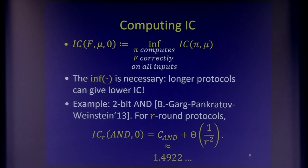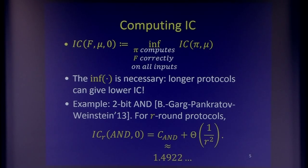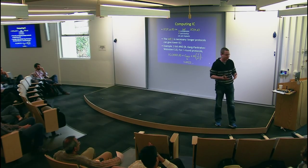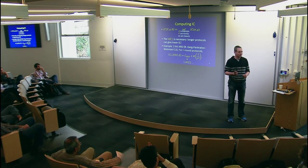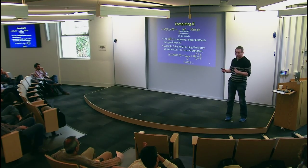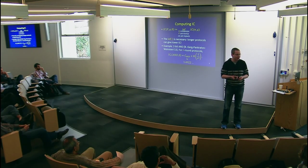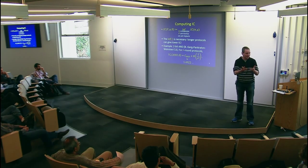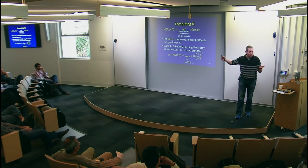In the case of zero-error expected communication, you still have the issue that protocols can be longer and longer. What you do: pick some delta, run for log N over delta rounds. If that didn't succeed, you become frustrated and just exchange the inputs. That modification doesn't cost much. Here we are also trying to compute up to delta — it's potentially an irrational number, so we have a kind of equation for it, but all you can do is compute approximations.